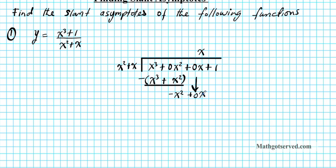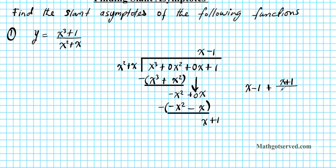We repeat the same procedure. x squared goes into negative x squared negative 1 times, so negative 1 goes up there. Negative 1 times x squared gives negative x squared, and negative 1 times x gives negative x. We subtract again: negative x squared minus negative x squared cancels out, and 0x minus negative x gives us x plus 1. So the result after dividing is x minus 1, plus the remainder x plus 1 divided by x squared plus x.